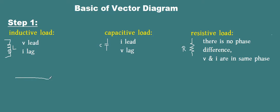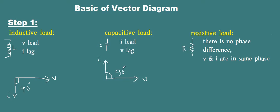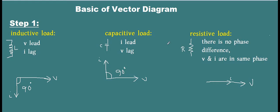So for an inductive circuit, if we take V as the reference voltage, then I will lag V by 90 degrees because it is purely inductive. For a capacitive circuit, if we take V as the reference value, then I leads V by 90 degrees. For a resistive load, V and I are in the same phase, so if we take V as reference, I is in the same phase.